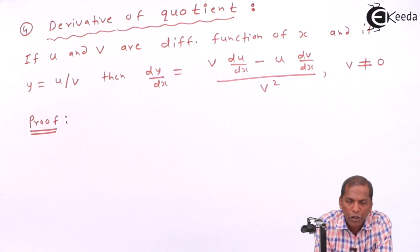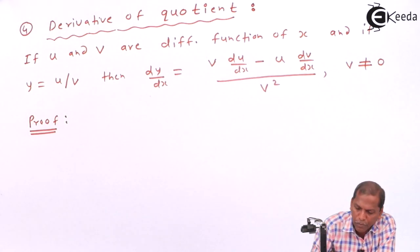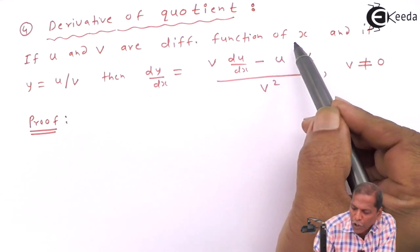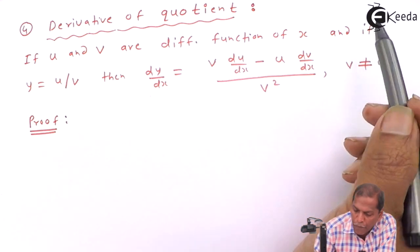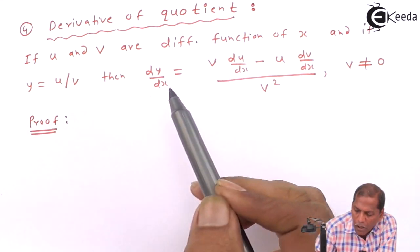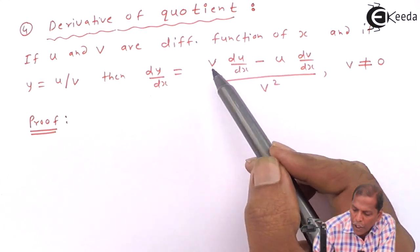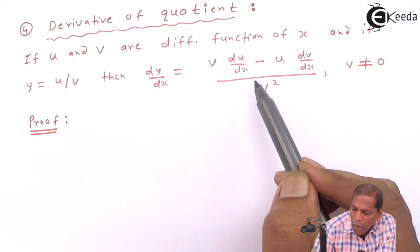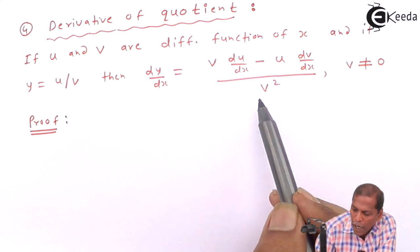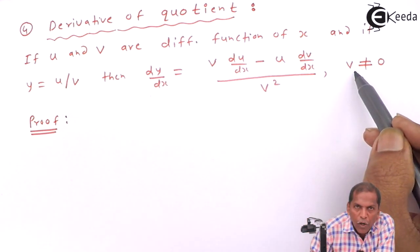Hello friend. Now we see the theorem which is based on the derivative of a quotient. If u and v are differentiable functions of x and if y equals u upon v, then dy/dx is equal to v into du/dx minus u into dv/dx, the whole thing divided by v square, provided v is not equal to zero.